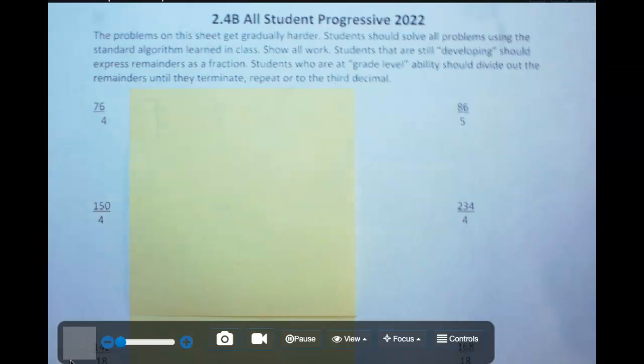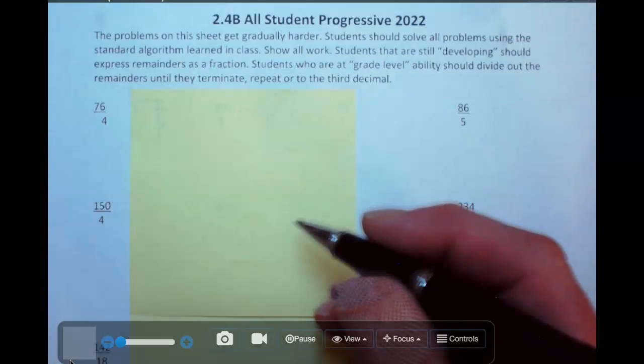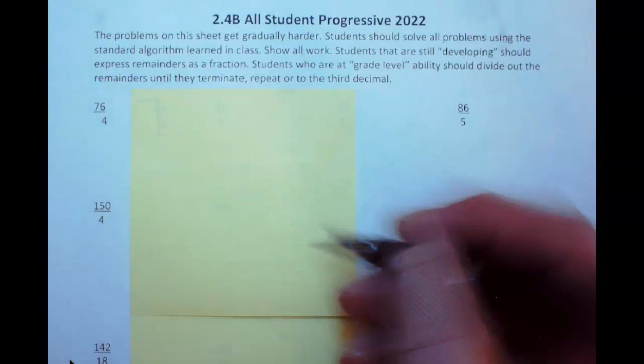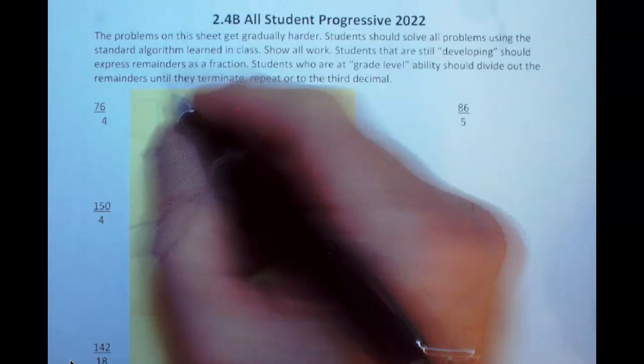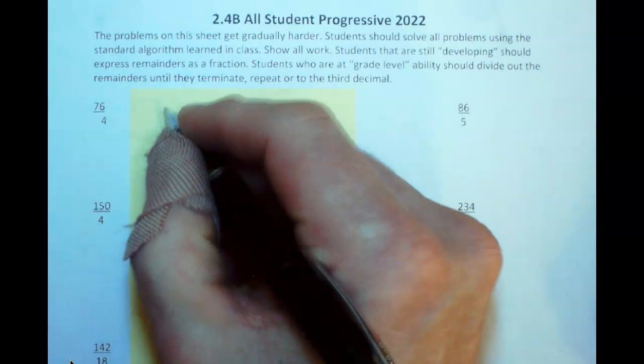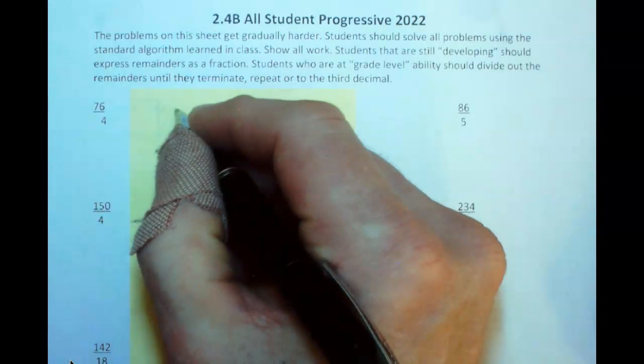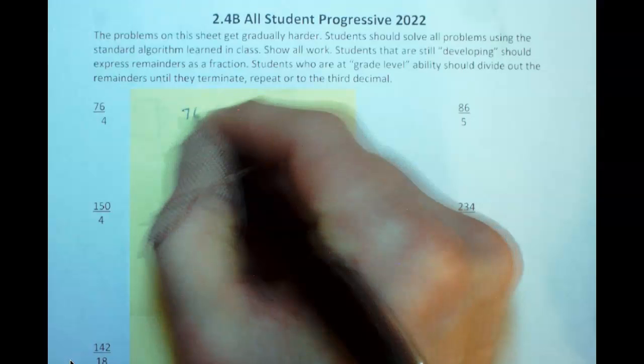Hey folks, this is a tutorial on 2.4B Student Progressive Division Problems. Let's go ahead and get started, I'll kind of explain the rules as I go. This first one is 76 divided by 4, so 76 divided by 4.